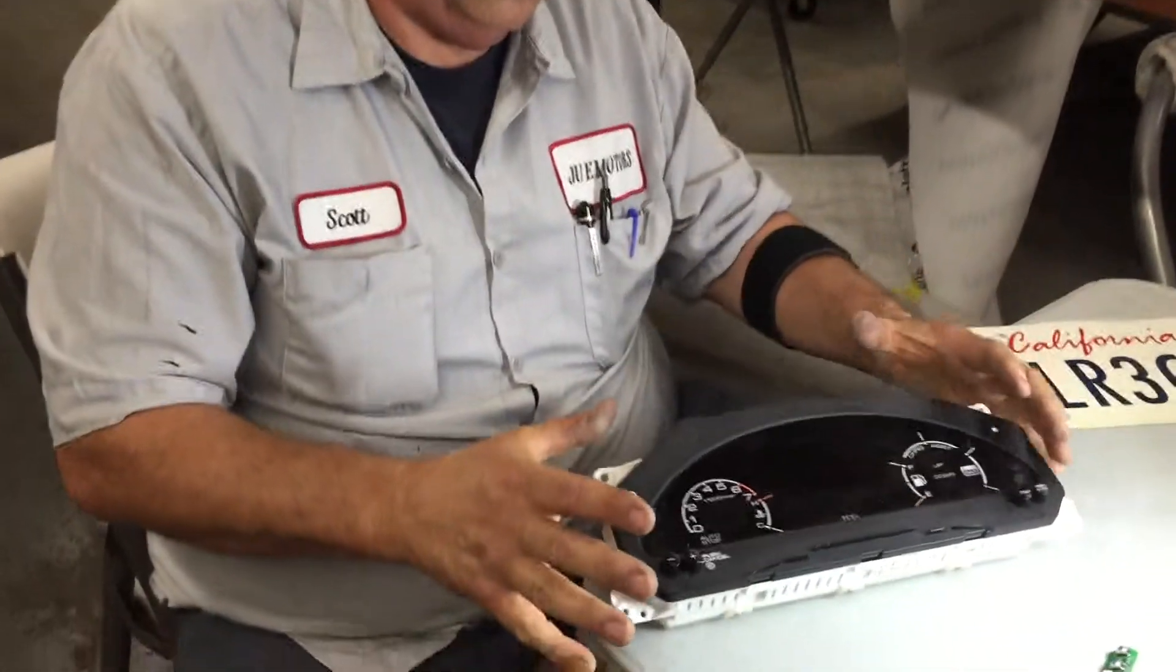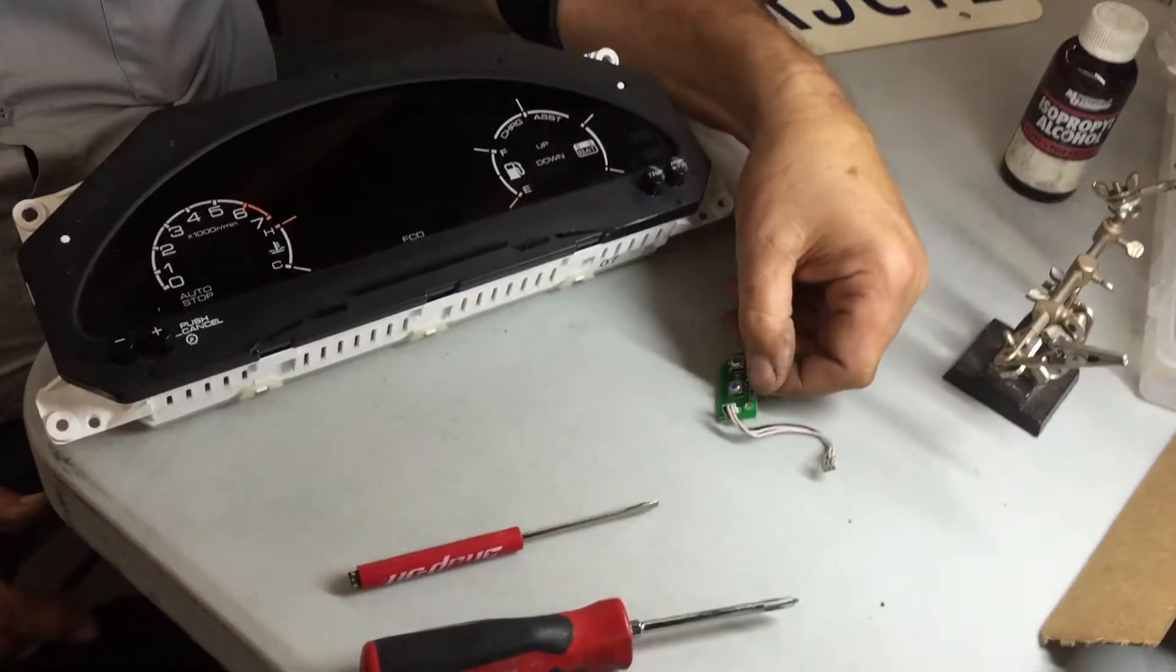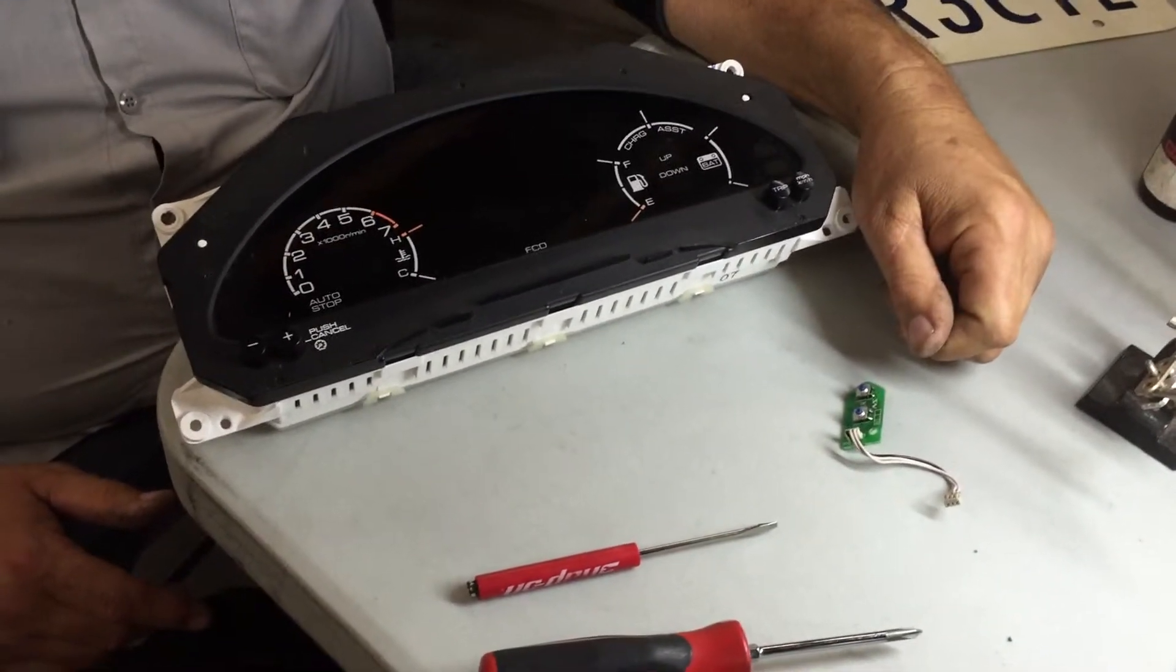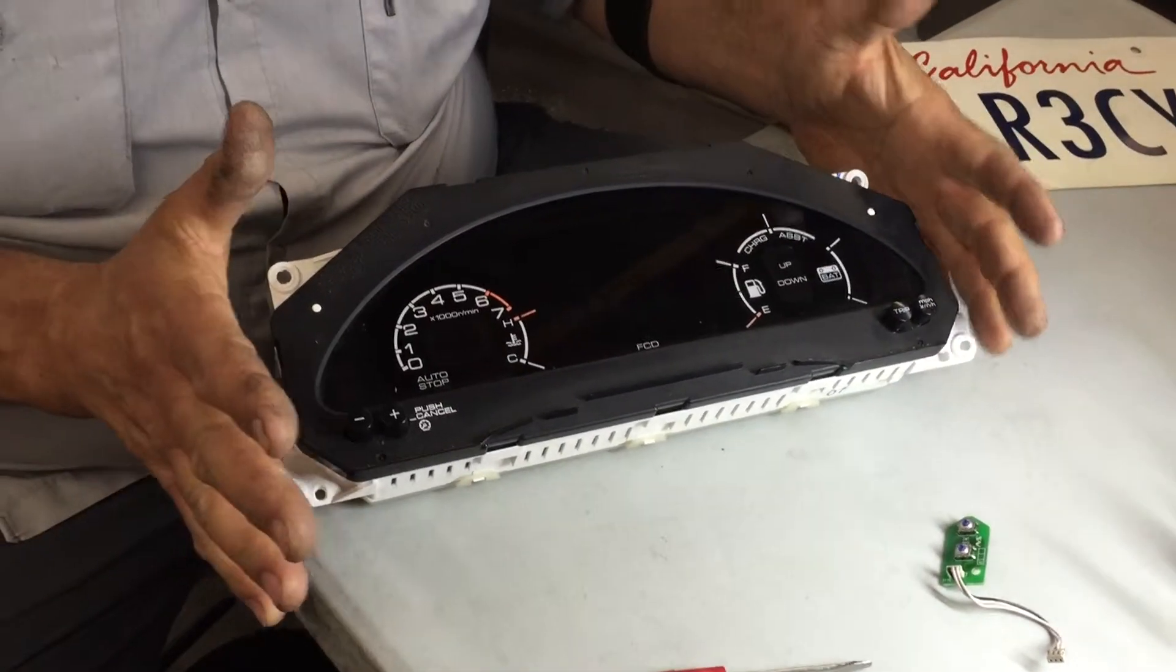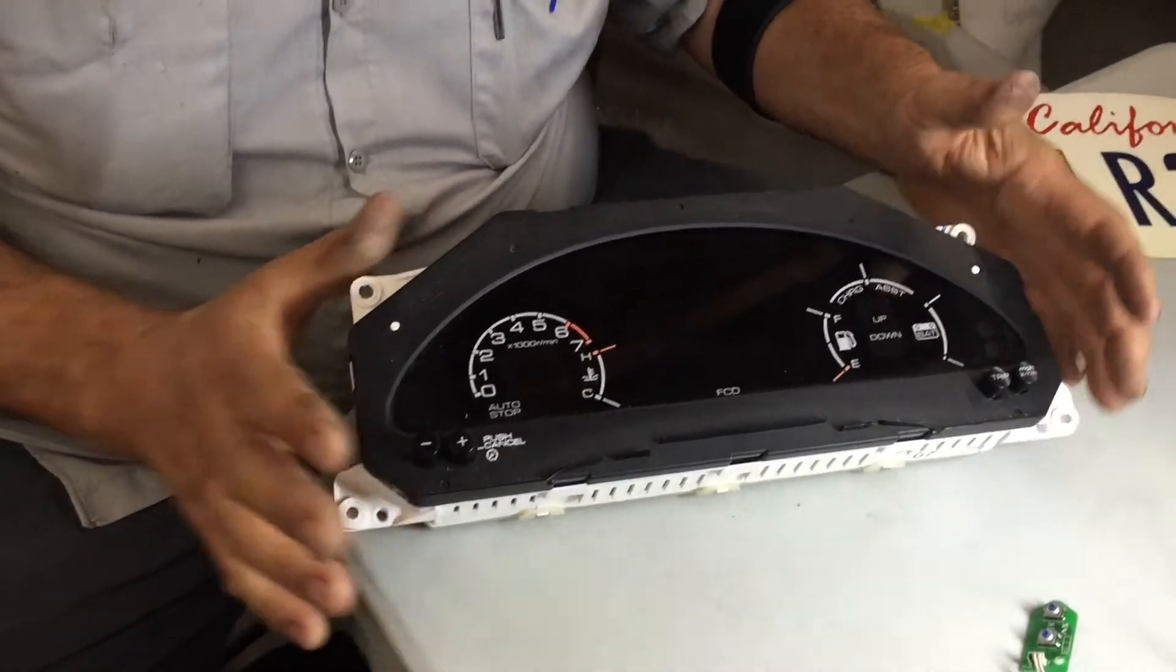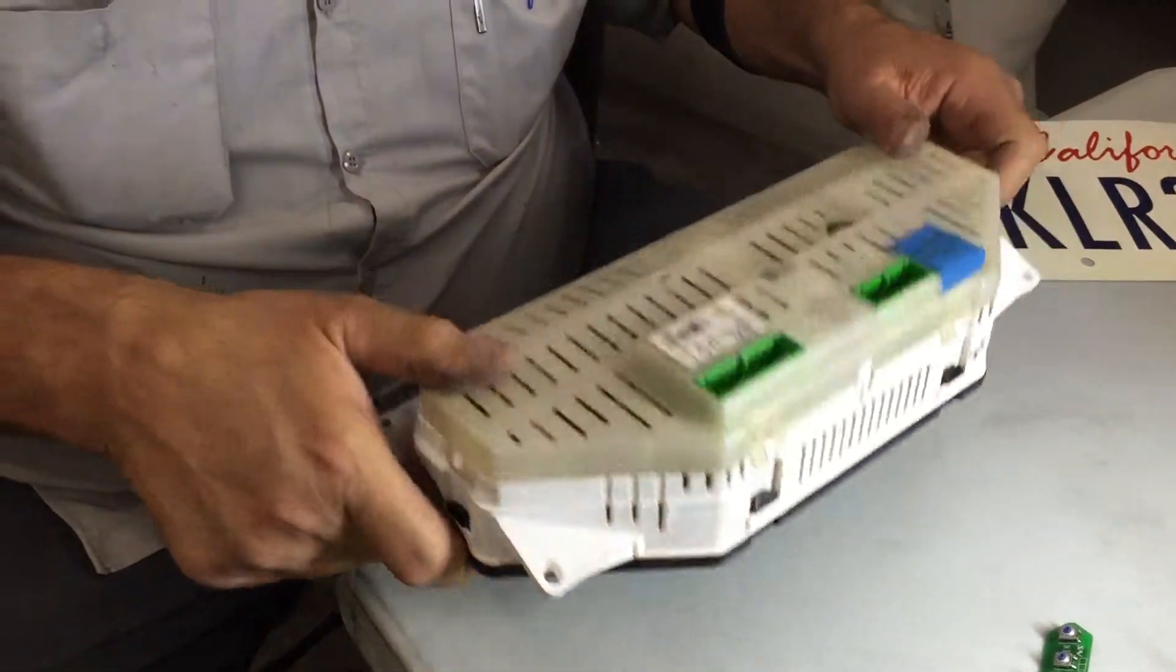Now we have a video where earlier we showed how to replace the little buttons that are on the circuit board. Now we're actually going to show how to install the circuit board in the cluster itself. So we have a cluster out of the car, and we're going to flip the cluster over.